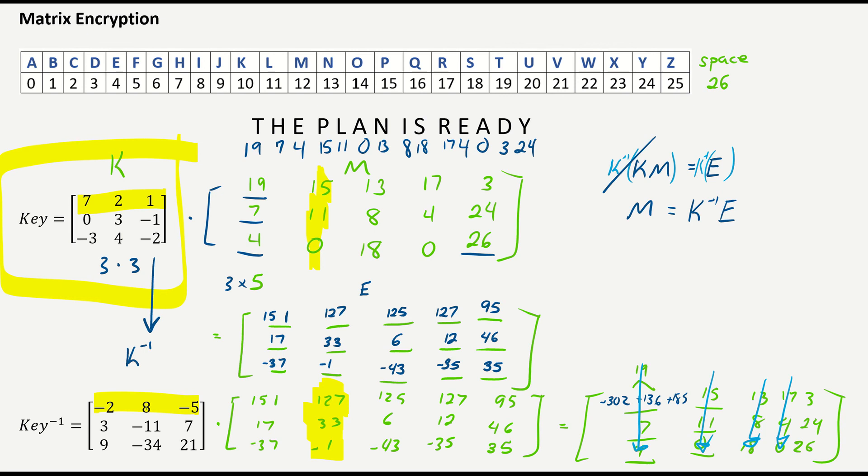So a similar process with a 3 by 3 encryption key. You're going to find a 3 by 3 matrix that has an inverse. You will take your message, put it into numbers, and put it into a matrix. Easiest way to put it in a matrix is fill it by columns like this. Multiply the key times the message. Send the encrypted message to your recipient. They will find the key inverse and go key inverse times the encrypted matrix to get the original message.